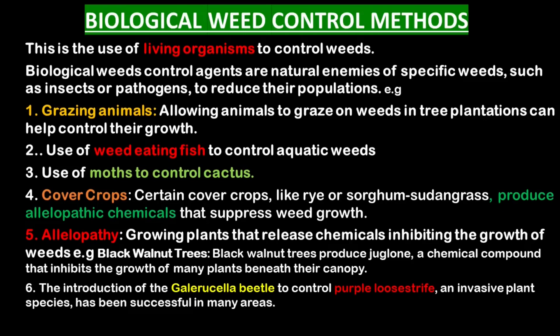Allelopathy involves growing plants that release chemicals which inhibit the growth of weeds. For example, the black walnut tree produces a chemical compound that inhibits the growth of many plants beneath its canopy. The introduction of the Galerucella beetle to control purple loosestrife, an invasive plant species, has been successful in many areas.